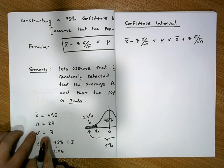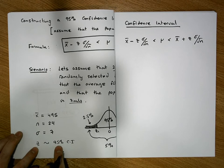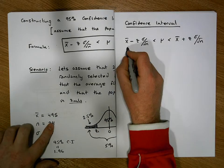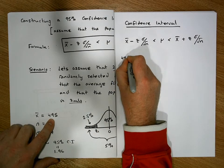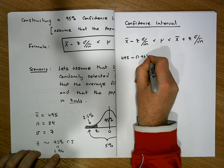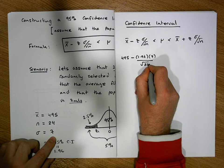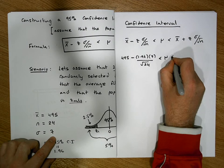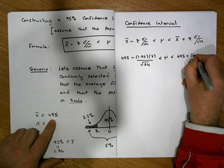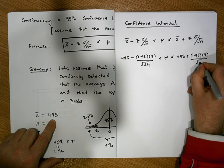Substituting these values into our formula: x-bar is 495, the z score is 1.96, sigma is 7, and n is 24. So it becomes: 495 minus 1.96 times 7 divided by the square root of 24, which must be less than mu, which must be less than 495 plus 1.96 times 7 divided by the square root of 24.